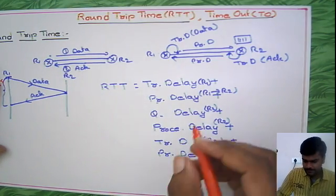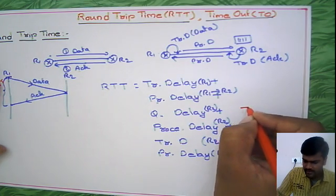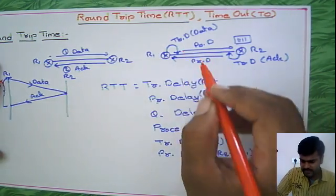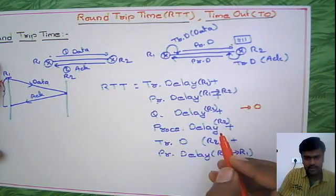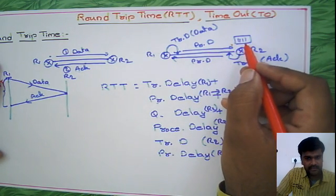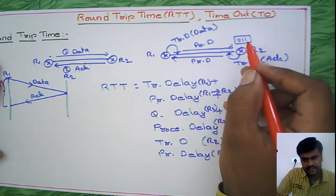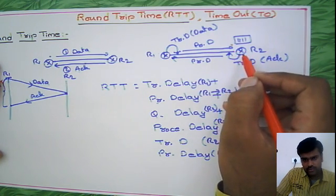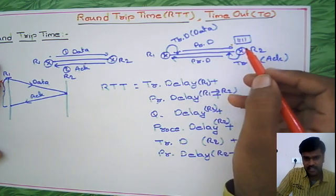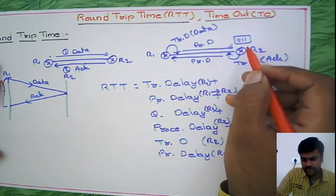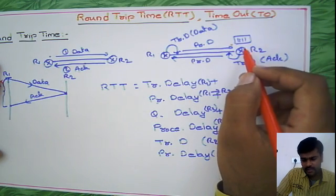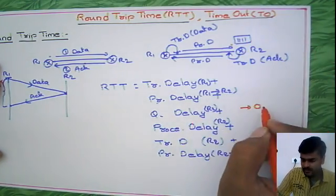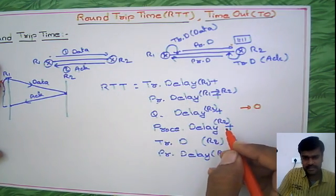First, we assume queuing delay is zero. Whenever the packet reaches R2, it has to wait in the buffer. But if it is the first packet to arrive, or if R2 is idle with no other packets to process, R2 is ready to accept the packet immediately. So there is no need to wait, and queuing delay becomes zero — though this is an assumption, not always the case.